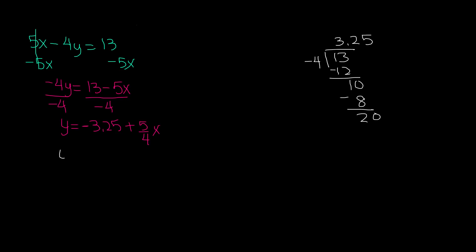Therefore, if we rewrite this into y equals mx plus b, it will be y equals 5 fourths x minus 3.25. And this is how you write 5x minus 4y equals 13 in slope-intercept form, which is y equals 5 fourths x minus 3.25.